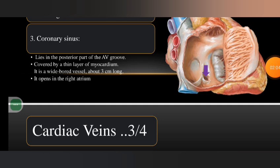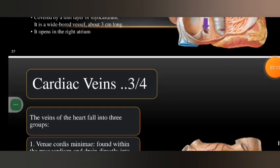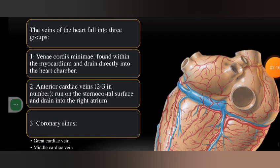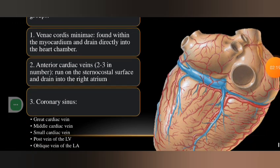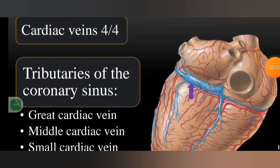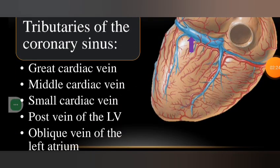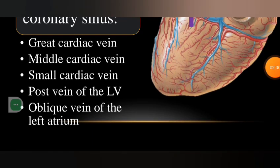The coronary sinus is a wide, broad vessel about three centimeters long and opens into the right atrium. Its tributaries include the great cardiac vein, middle cardiac vein, small cardiac vein, posterior vein of the left ventricle, and the oblique vein of the left atrium.